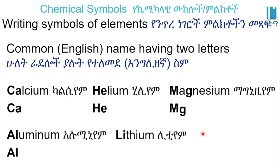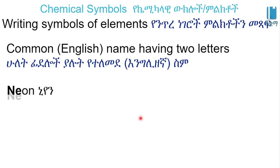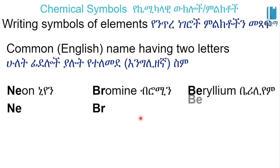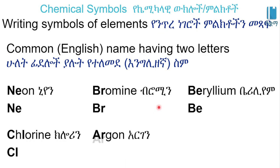Silicon has the symbol Si. Nickel has the symbol Ni. Bromine uses Br. Iron is in the same category. Zinc has its symbol in the second part of the name.